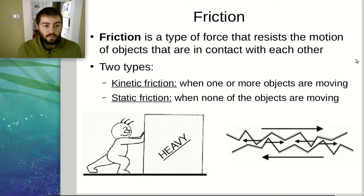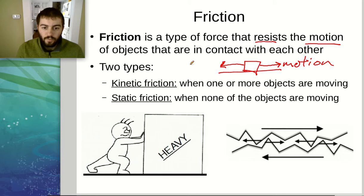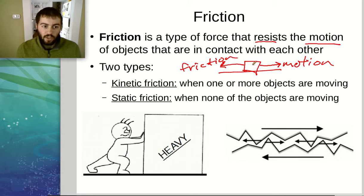Another example of a contact force is friction. Friction is basically just a force that resists motion — the key is that friction always acts against motion. So if an object is trying to move one way, friction always works against that. If a box is sliding to the right, the frictional force acts to the left. Friction is always going to act in the direction opposite to the object's motion. There's no way that friction can help the motion; it always has to resist or oppose it.